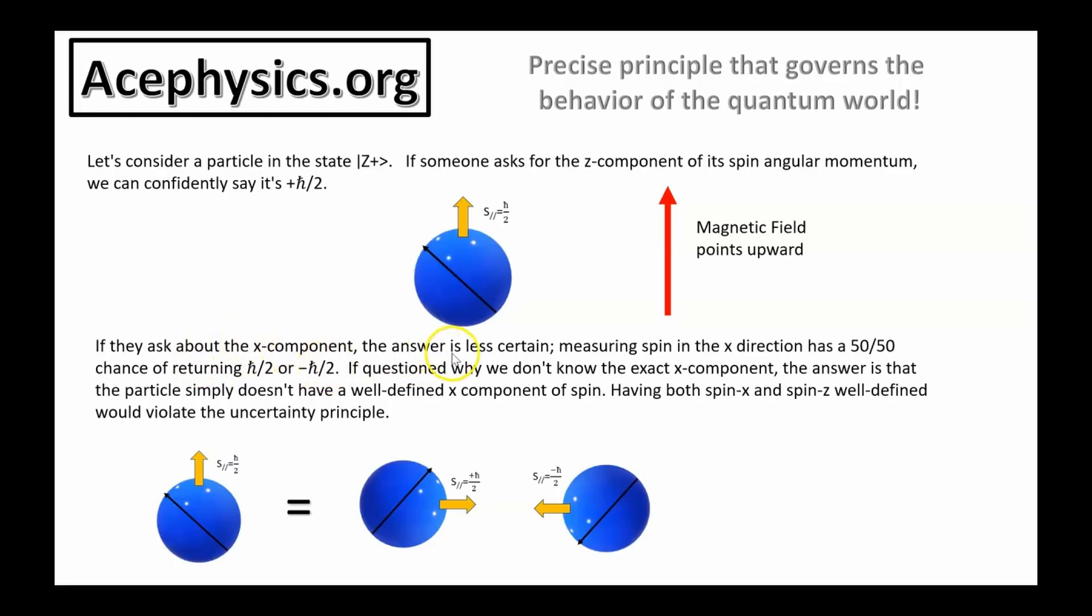If we ask about the x component, the answer is less certain. Measuring the spin in the x direction has a 50-50 chance of being h bar over two or minus h bar over two. A spin up state is equal to half h bar over two in the plus x direction and half h bar over two in the minus x direction. I just want to know what is the exact x component of the spin angular momentum. I know the z component is h bar divided by two. I want to know the x component. Can you please just tell me what that is? The particle simply doesn't have a well-defined x component of spin. Having both spin x and spin z well-defined would violate the uncertainty principle.